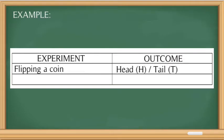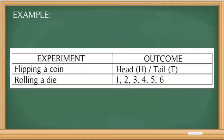Another experiment is rolling a die. Our outcome after rolling a die could be either 1, 2, 3, 4, 5, or 6. So heads and tails, and 1 to 6 — this is what we call our outcome, or the possible results of our experiment.